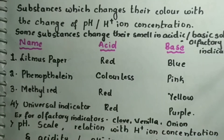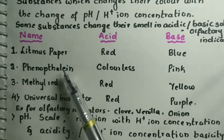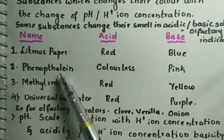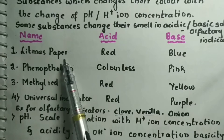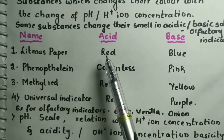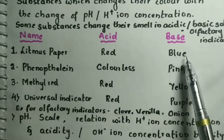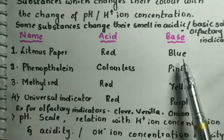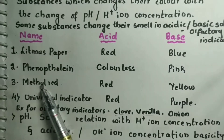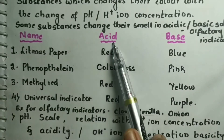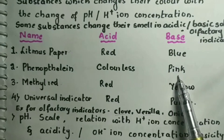Let us see a few indicators and how they change in acidic and basic solutions. Litmus paper changes to red in acidic solution and to blue in basic solution. Phenolphthalein becomes colorless in acidic solution and a beautiful pink color in basic solution.